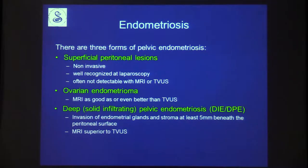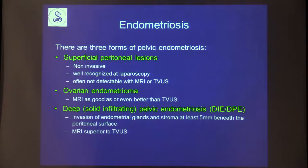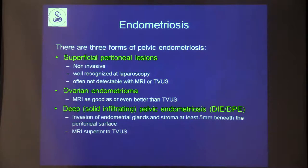There are three forms of pelvic endometriosis. The first is superficial peritoneal lesions — non-invasive lesions well recognized at laparoscopy but very often not detectable by MRI or transvaginal ultrasound. The second is ovarian endometriomas, for which MRI is as good or even better than transvaginal ultrasound. The third is deep pelvic or deep infiltrating endometriosis — invasion of endometrial glands and stroma at least five millimeters beneath the peritoneal surface — where MRI is considered superior to transvaginal ultrasound.